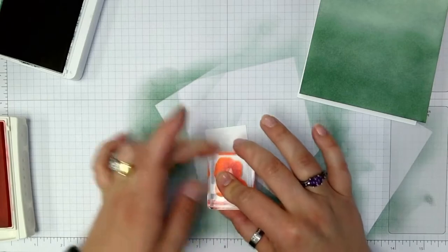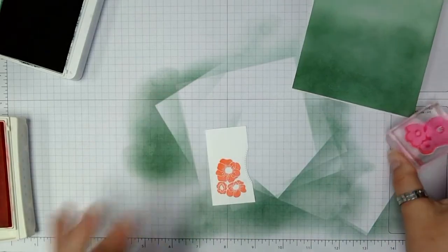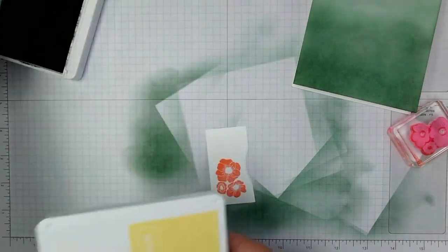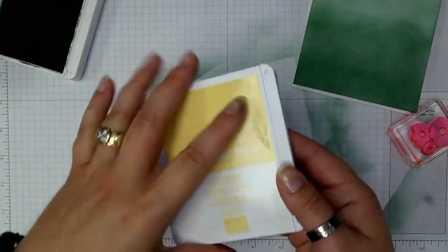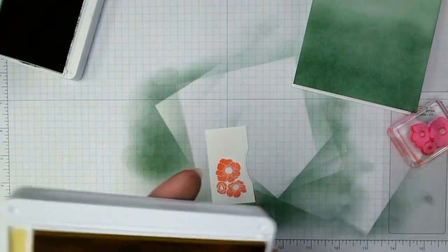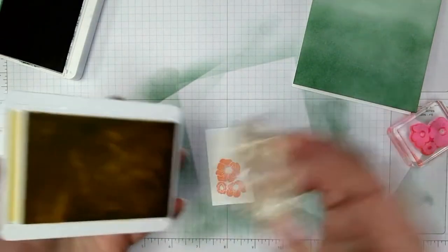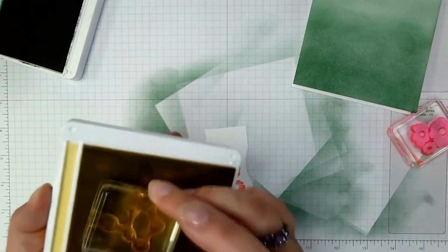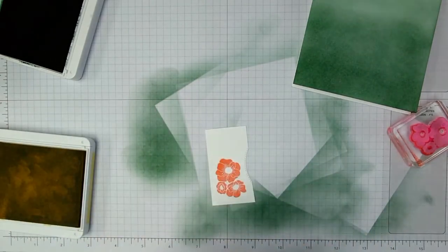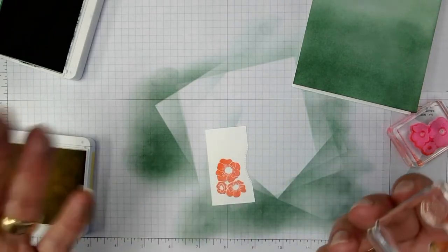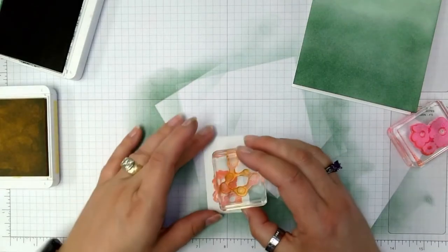I'm just going to do once because I cheated and did a few things ahead of time this time. So I'm just going to stamp that. Then I'm grabbing my So Saffron and the inside of the flowers, and it's got these little pine cones on it too. If you want to, you can wipe some of that ink off of the pine cones. We don't really need to stamp those, but if you do stamp them that's fine. It's not going to hurt anything.